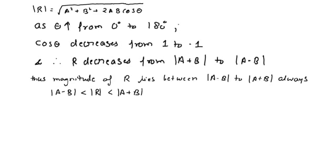Mathematically, |a minus b| is less than or equal to R, which is further less than or equal to |a plus b|. Thus, the magnitude of the resultant of two vectors will always lie between the difference in magnitude of the two vectors and the sum of the magnitudes of the two vectors.